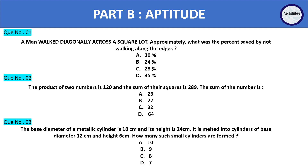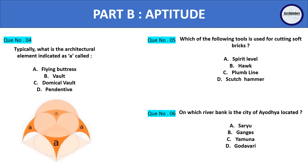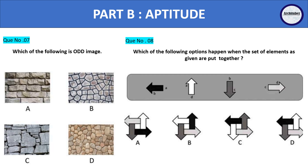Discussing about Part B, we have some quantitative questions — we have discussed quantitative questions recently in my previous video, so if you haven't watched them please go give it a watch. Then we have some questions related to architecture and some related to construction. For example, question number four asks: typically what is the architectural element indicated — is it (a) flying buttress, (b) wall, (c) domical wall, or (d) pendentive? Try to answer this. Then we have identify-the-image or put-together-a-pattern questions.